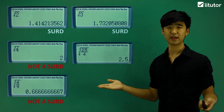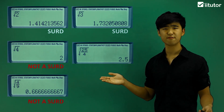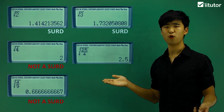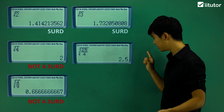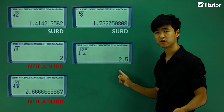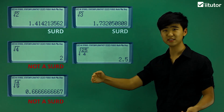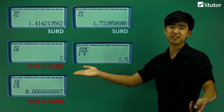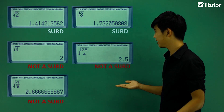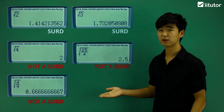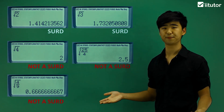We have another fraction — the square root of 25 over 4. We put it in a calculator and we just get 2.5. Just 2.5, so it's not endless. So again, this is not a third. The square root of 25 divided by 4 is not a third.